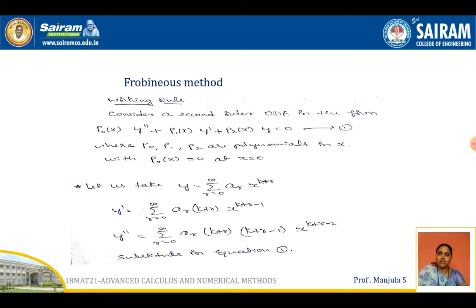If you substitute x = 0 in P0(x) and you get P0(x) = 0, then only we have to apply the Frobenius method. If P0(x) is not equal to 0, then we will go for the power series method. So if P0(x) = 0 at x = 0, we have to use the Frobenius method.